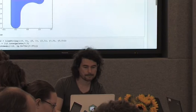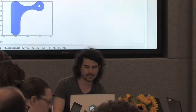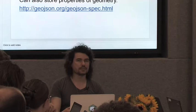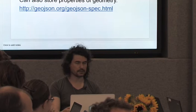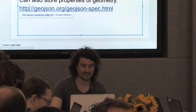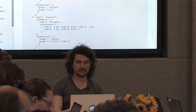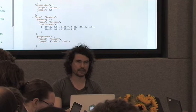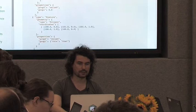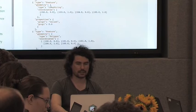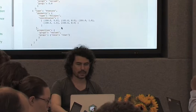Another representation of geometry is GeoJSON, which is basically the same as WKT but represented in JSON format. The good thing about GeoJSON is that it contains not only geometries, but also can contain properties of the geometries, which is really good. If you combine a geometry with a property, we call it a feature. We store a feature collection, which is a list of features, and each feature has properties and a geometry. It also has some other things like coordinate reference systems, which we'll get back to later.